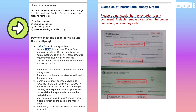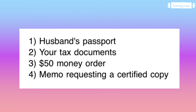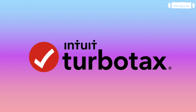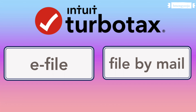The embassy replied really quickly — the next morning they sent me a list of what I needed to send to them and how I could send my documents. These are the things I needed to send to the embassy: my husband's passport, my 2020 tax documents, a $50 money order, and a memo requesting a certified copy for my tax documents. I used TurboTax to fill out everything.